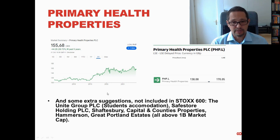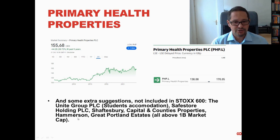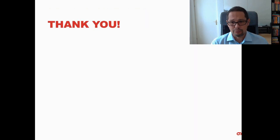Remember, everything presented is part of the STOXX 600. Other UK REITs not in the STOXX 600 but still above one billion pounds market cap are: Unite Group PLC in student accommodation — though I'm not sure about the social aspects of investing there — Safestore Holding PLC, Shaftesbury, Capital and Counties Properties, Hammerson, and Great Portland Estates. These may be other alternatives worth investigating. That's it for today. Next time it's France — only four companies — and hopefully no more surprises, then a wrap-up comparing all three countries including FFO metrics.